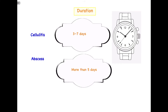The next differentiating point is duration. Cellulitis lasts for about 3 to 7 days, whereas abscess lasts for 5 days or more. Cellulitis, being a diffuse inflammatory reaction, destroys loose connective tissue and spreads to distant places, naturally taking more time. Abscess, being a localized swelling, is easily contained by the body and typically lasts around 5 days or more.